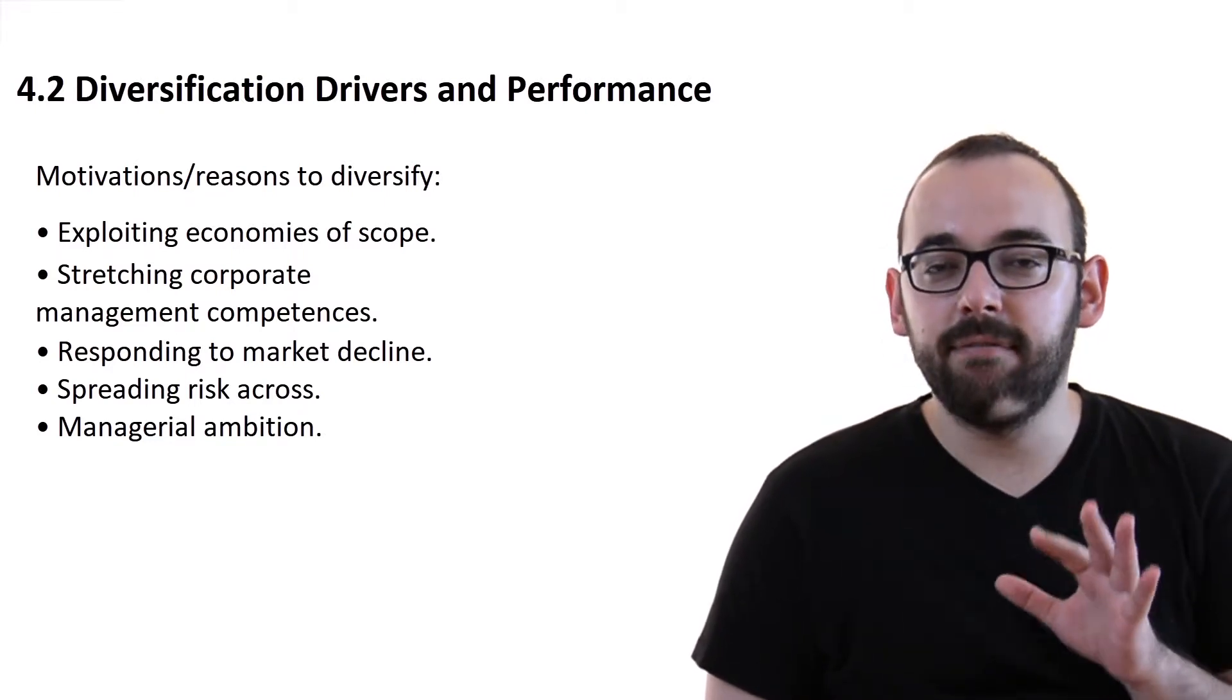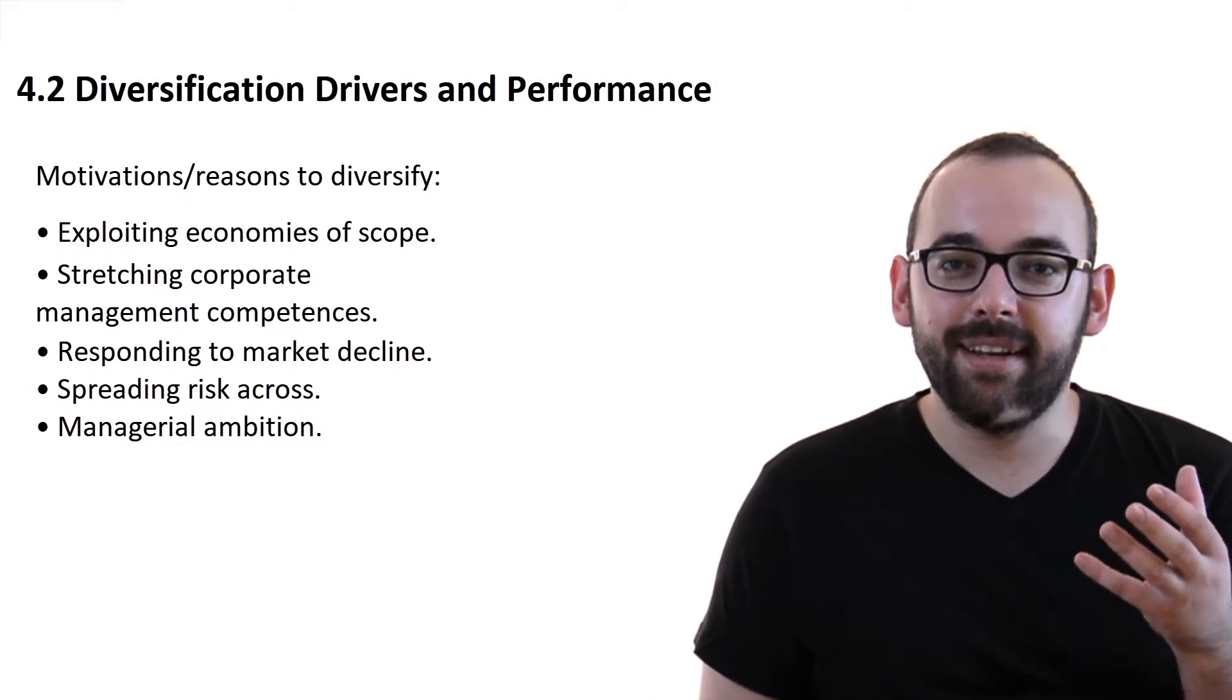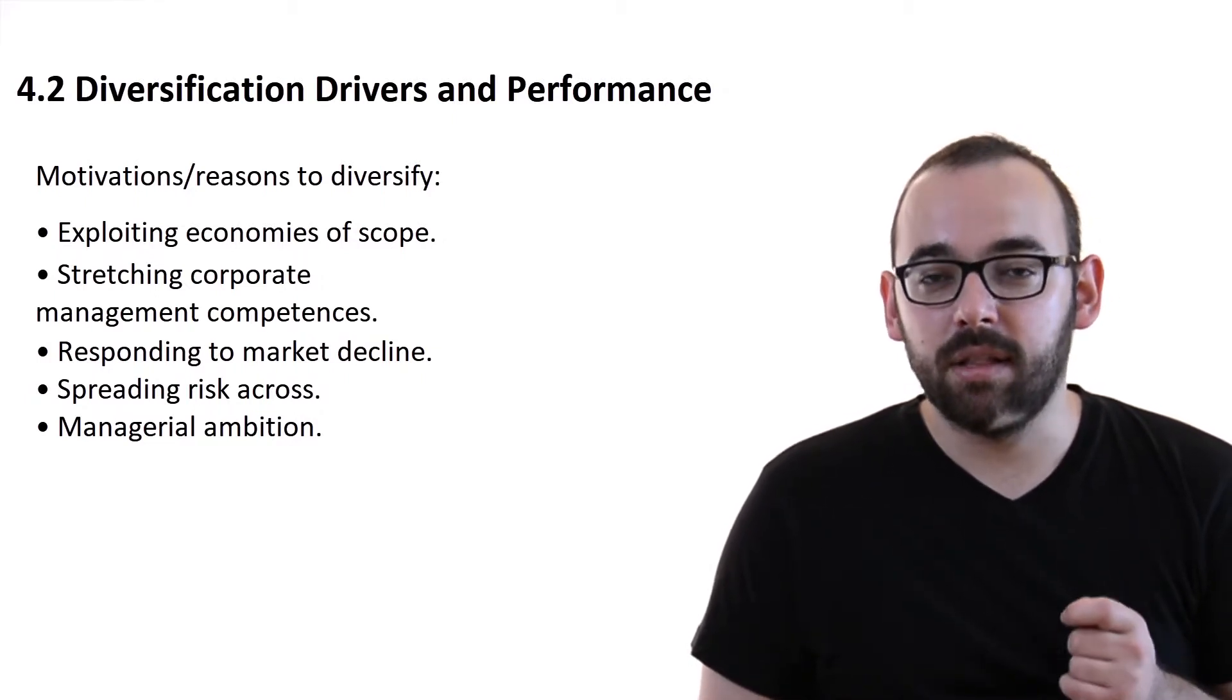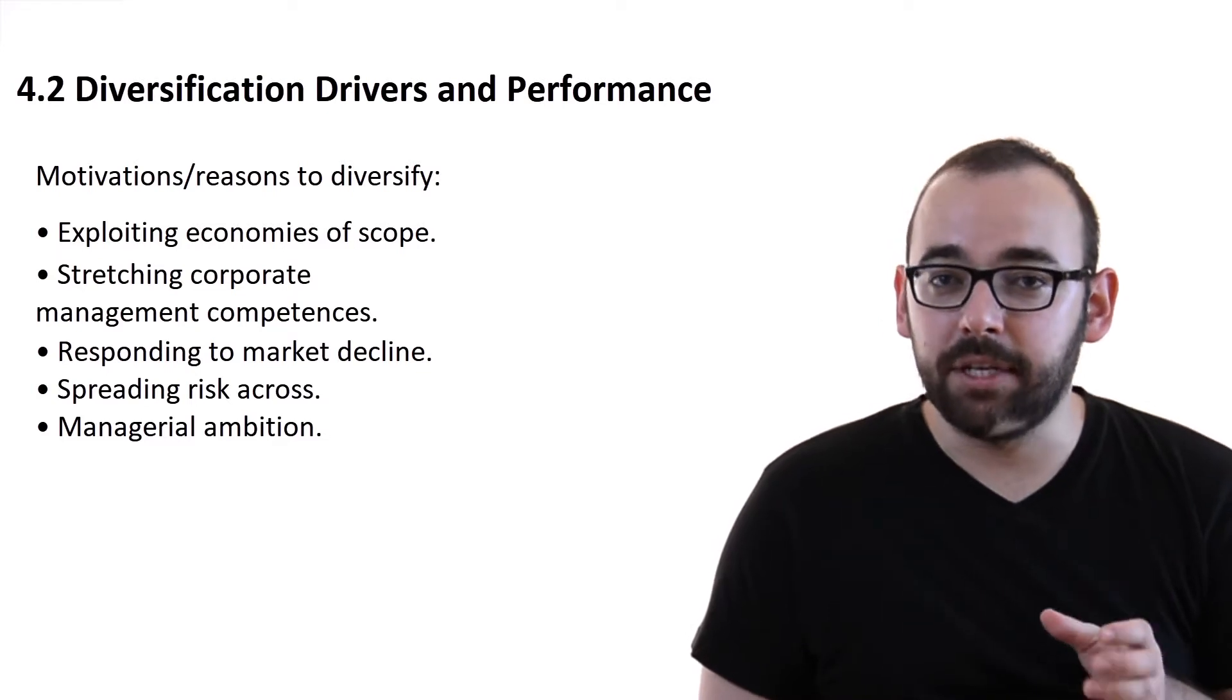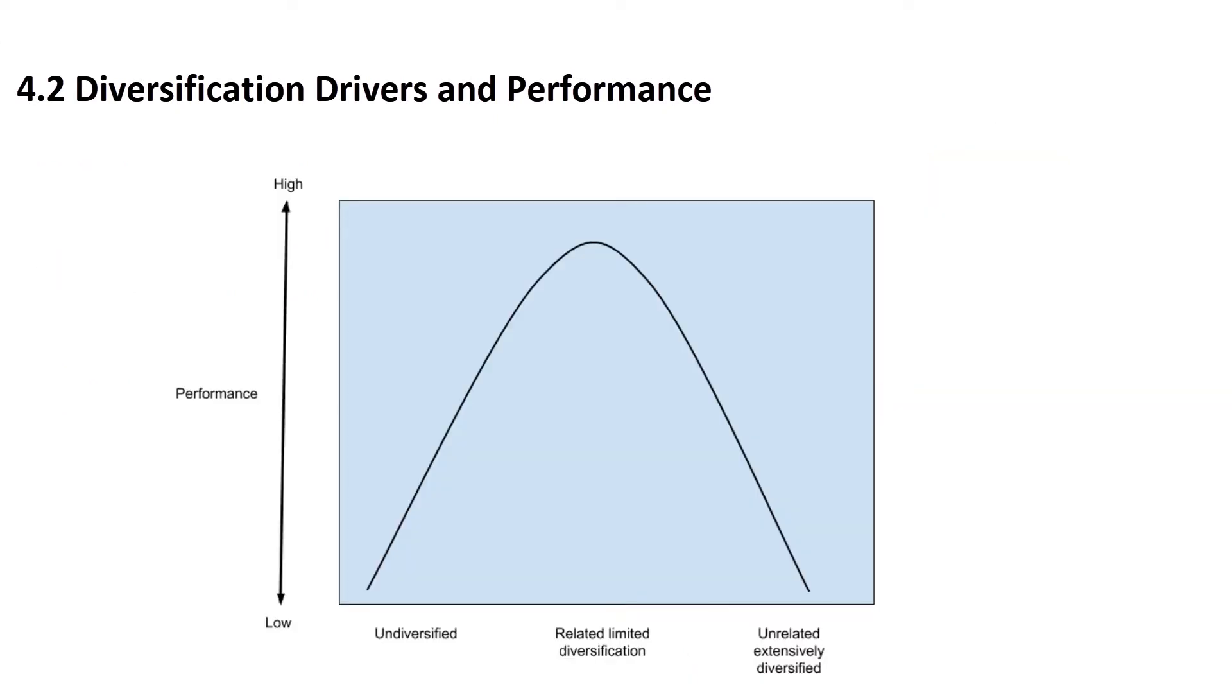So, we have briefly outlined five options, which are outside of the strive for revenue and profit, some extra diversification drivers. Now, we need to take a look at what will happen with our efficiency if we would like to diversify ourselves, and for that, I have one nice drawing. This is a picture that will tell us how effective in terms of production, performance, or profitability we are going to be when we diversify. On the vertical axis, we have performance depicted, which ranges from low to high. On the horizontal axis, we have three different kinds of diversification: undiversified, related limited diversification, and unrelated extensive diversification.